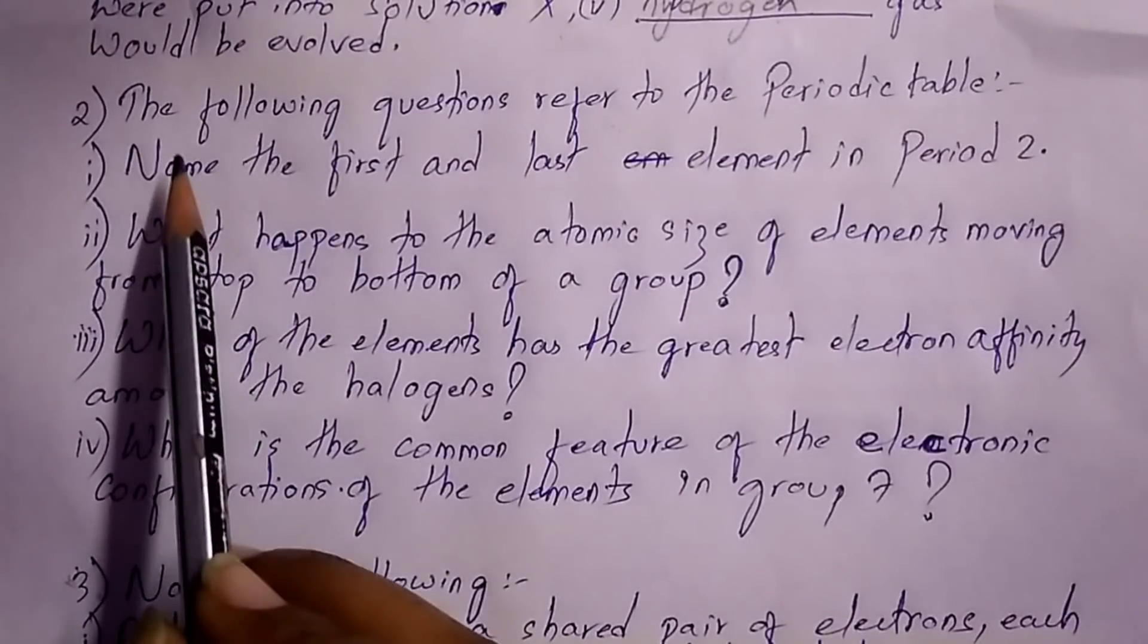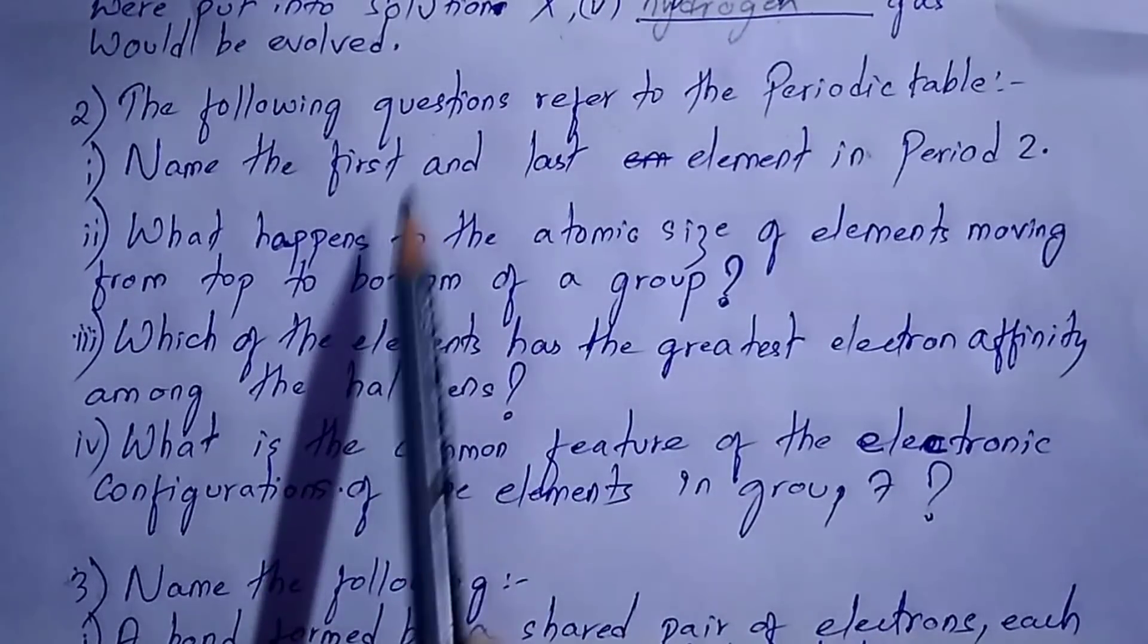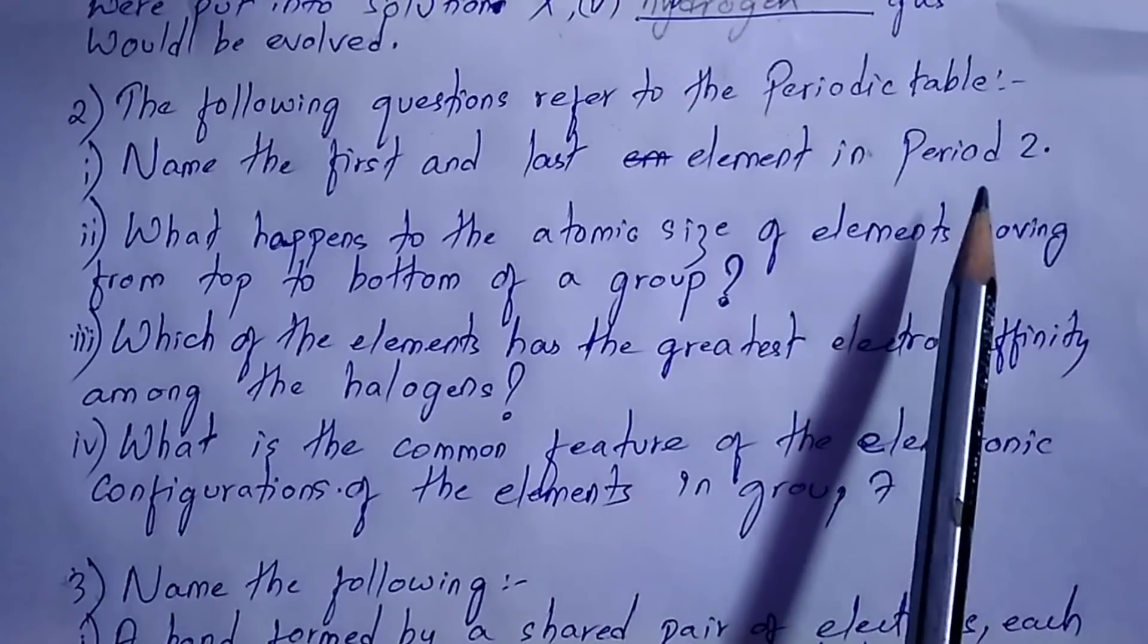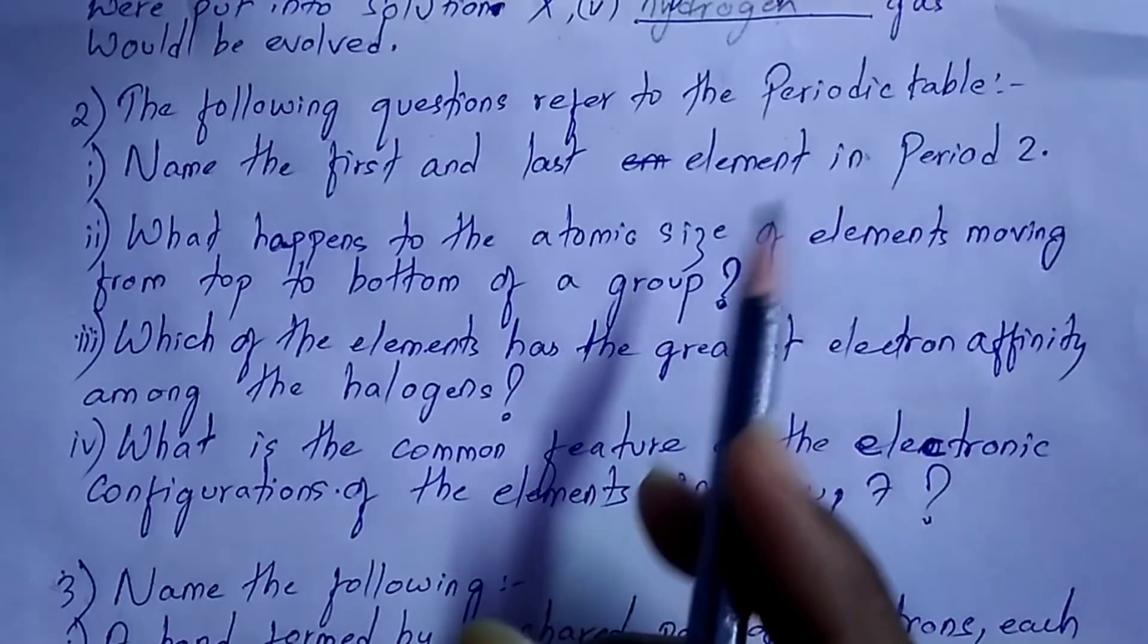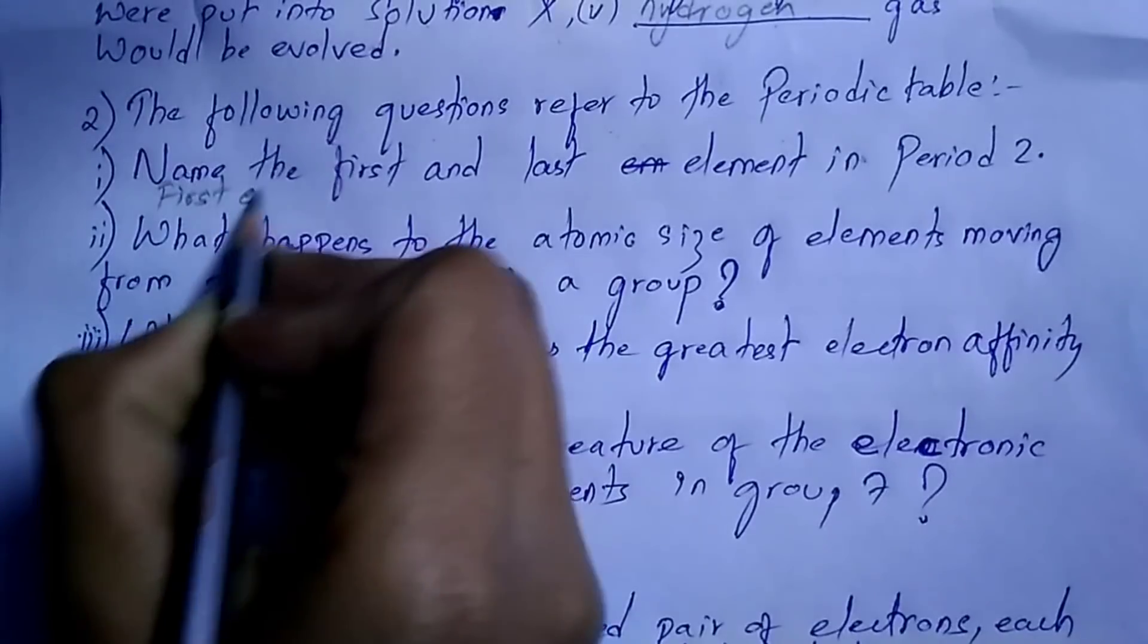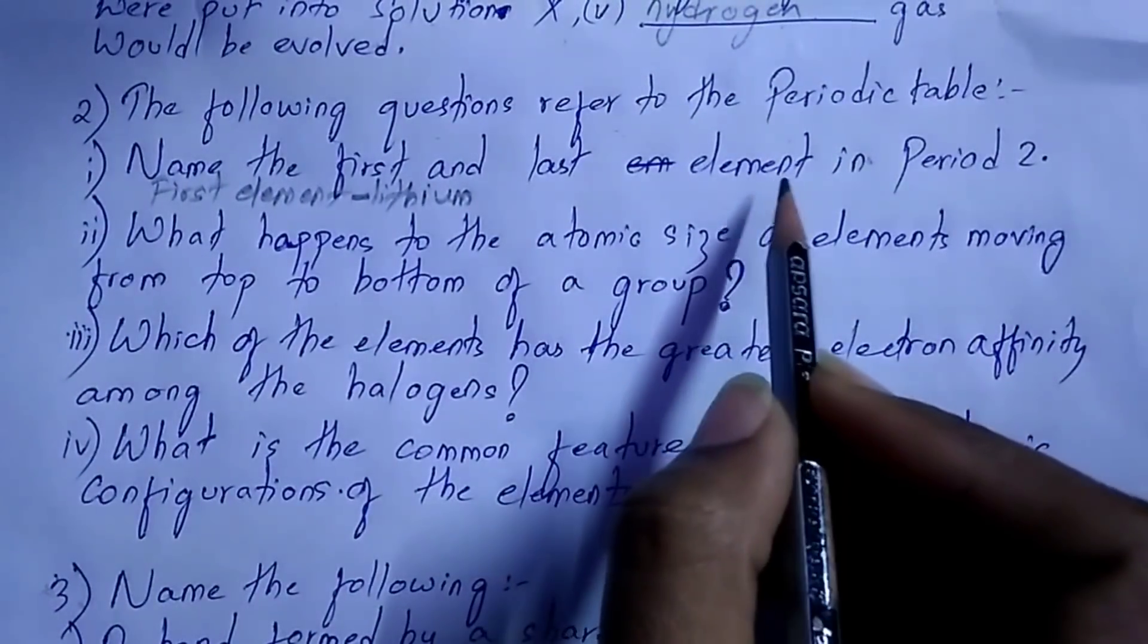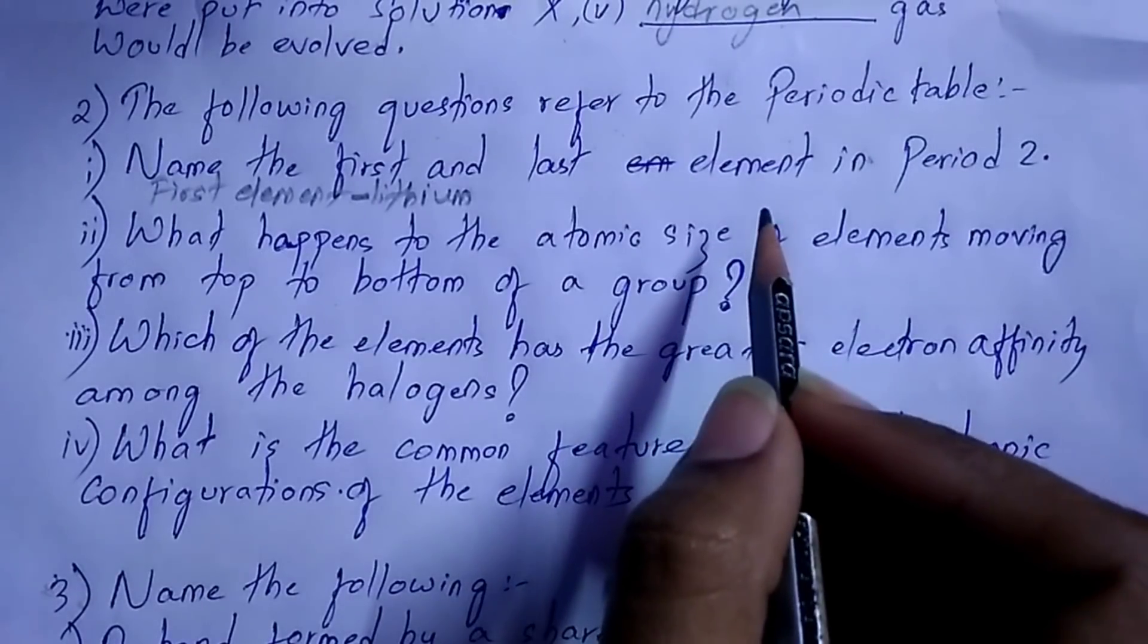The following questions refer to the periodic table. These questions are from periodic table. First question: name the first and the last element in period 2. The first element in period 2 is lithium, and the last element is neon.